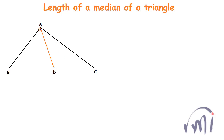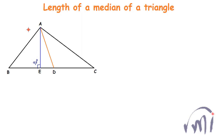Now let me draw one more line from point A to side BC which is perpendicular to BC — that would be the altitude of triangle ABC from point A, and let this point be point E. This angle is equal to 90 degrees, and let us assume the length AD is equal to Ma, because AD is a median from vertex A of triangle ABC.